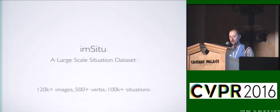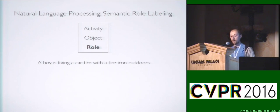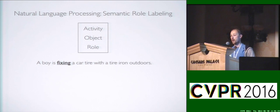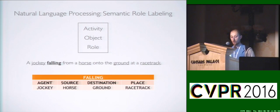Now I'll talk about our dataset, imSitu, a large-scale situation recognition dataset that solves this central challenge. The basic idea is to go to natural language processing and reuse resources surrounding semantic role labeling. The basic idea behind semantic role labeling is: given a sentence — a boy is fixing a car tire with a tire iron outdoors — you first identify the verb, then identify all arguments to the verb, such as the boy, car tire, tire iron, and then classify them into a set of verb-specific roles.